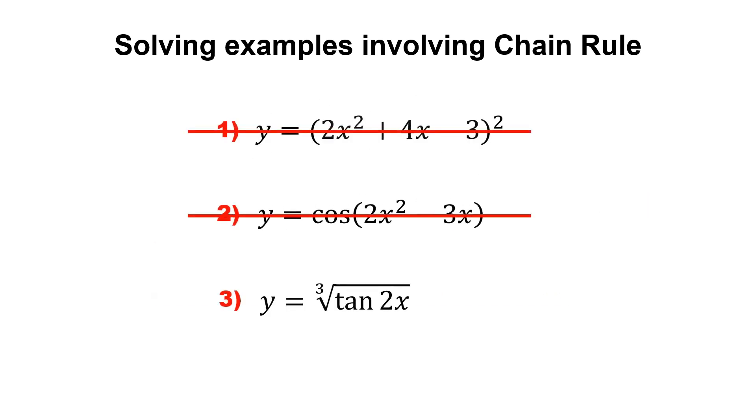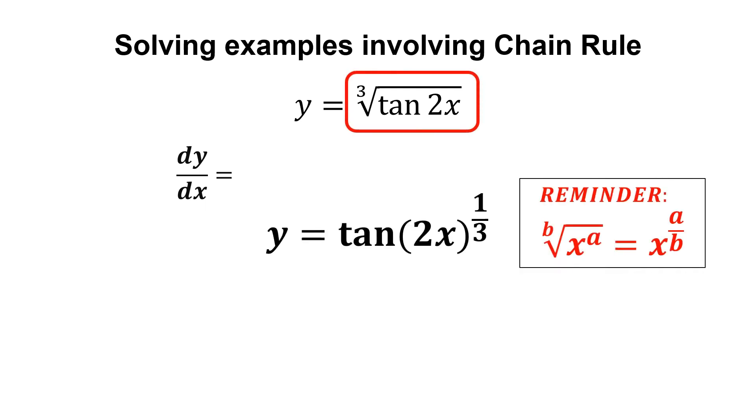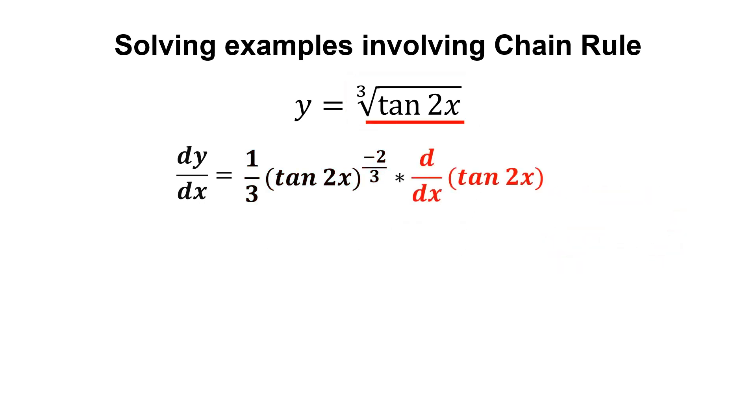Now, the last example and this is what I mentioned that we need to use chain rule inside a chain rule. We first differentiate the whole thing, but before that, we can rewrite the function into this. Multiplying with the derivative of the inner function. Notice that this is actually a composite function, so we use the chain rule again here.